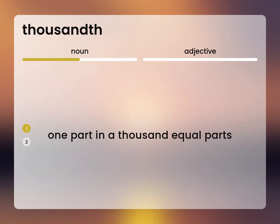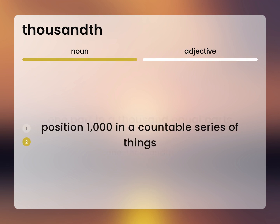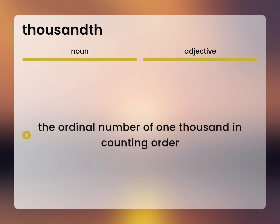One part in a thousand equal parts. One thousandth. Position one thousand in a countable series of things. The ordinal number of one thousand in counting order.